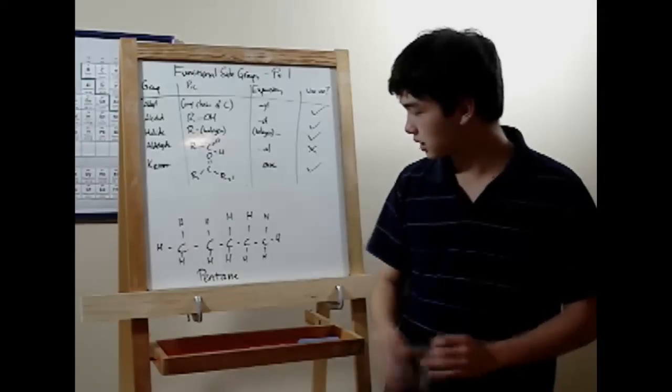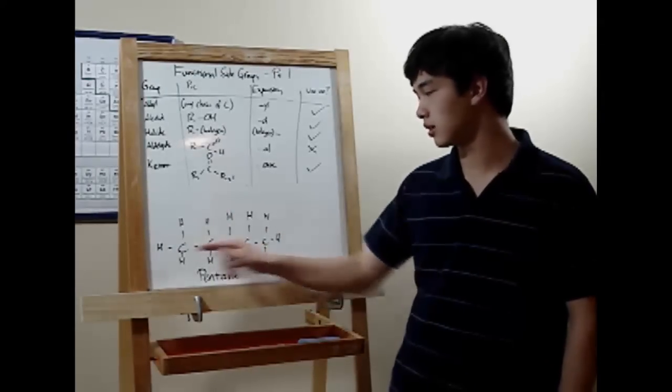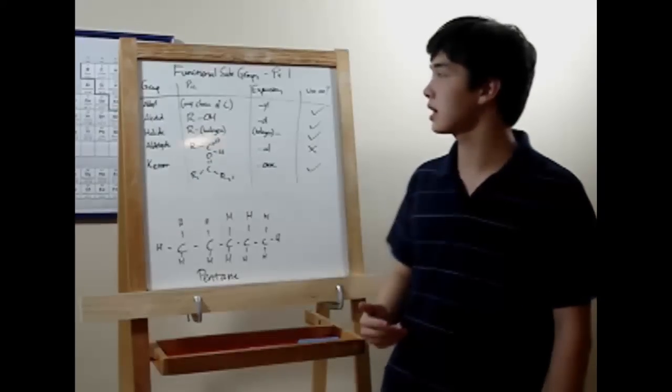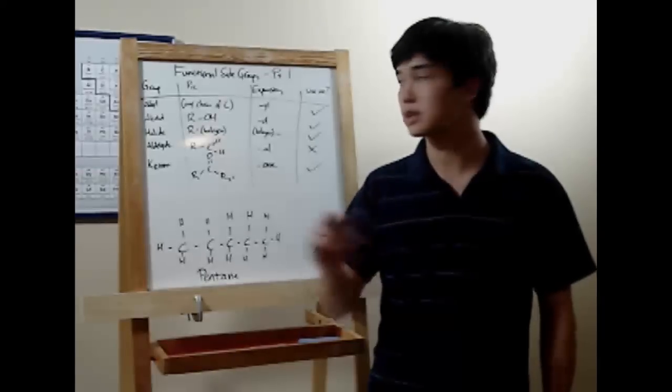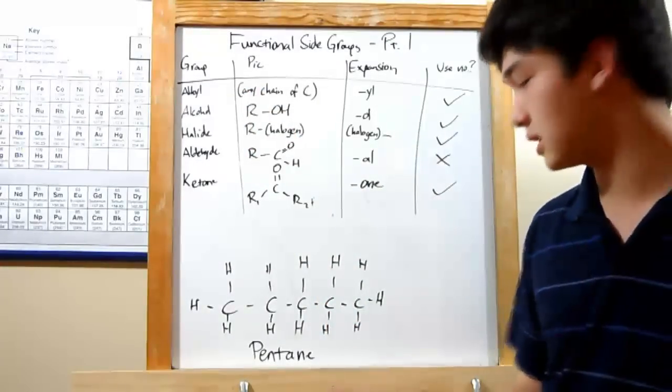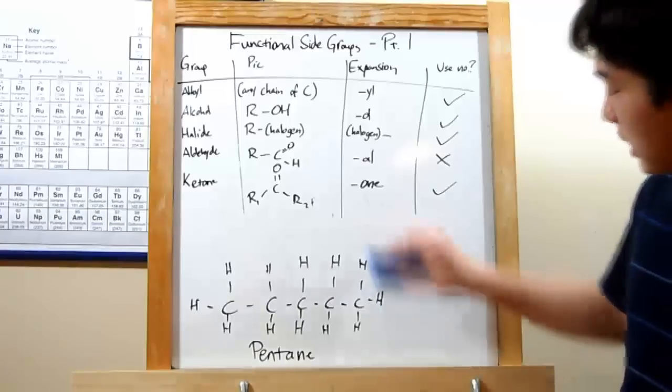All right, so here we have a lovely pentane molecule, five carbons and hydrogens all around. Now we're going to start plugging in some functional side groups. First up is the alkyl group.